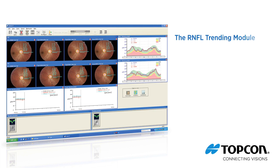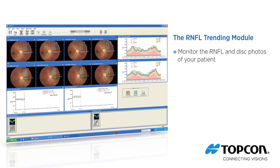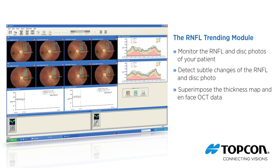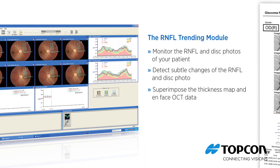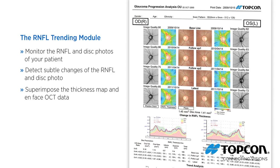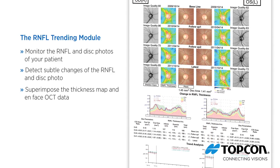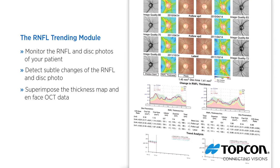The RNFL trending module allows you to monitor the RNFL and disc photos of your patient over a series of visits. Each image is registered to the other, enabling you to detect subtle changes of the RNFL and disc photo. You can also superimpose the thickness map and false OCT data over the fundus photo. The RNFL trending report presents the trending of RNFL thickness compared to the normative database as well as trends in other disc parameters.